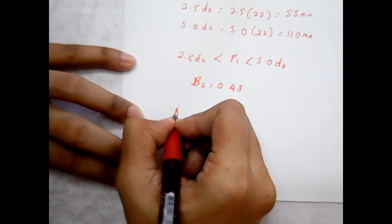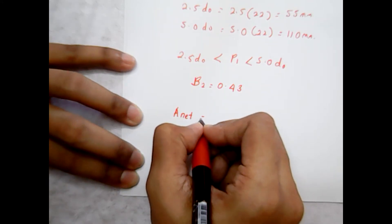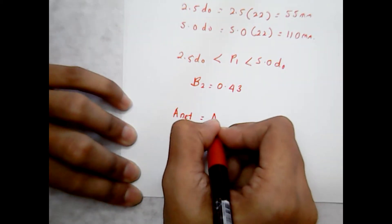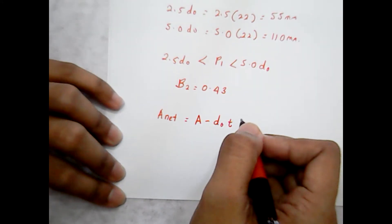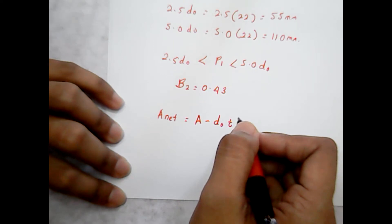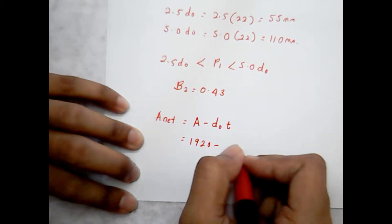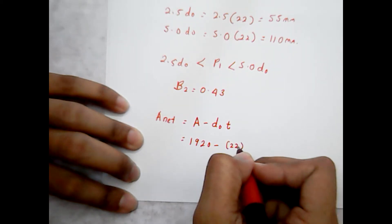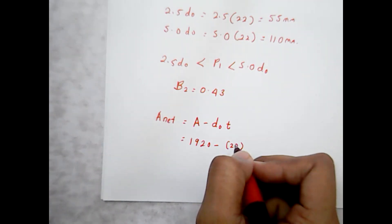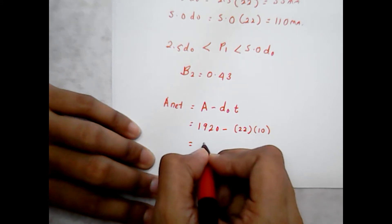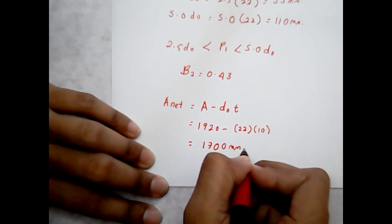Now let's find the A_net value. A_net is your gross cross-sectional area minus the area removed by the bolt hole. In this case, A_net = A − D0 × t = 1920 − 22 × 10, where the thickness is 10 mm. When you calculate this, you get 1700 mm².